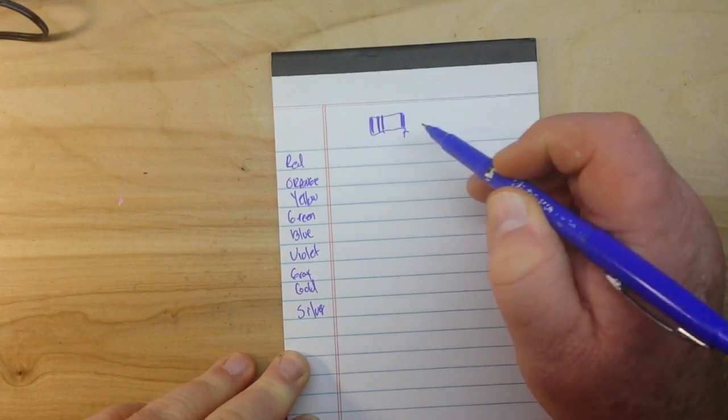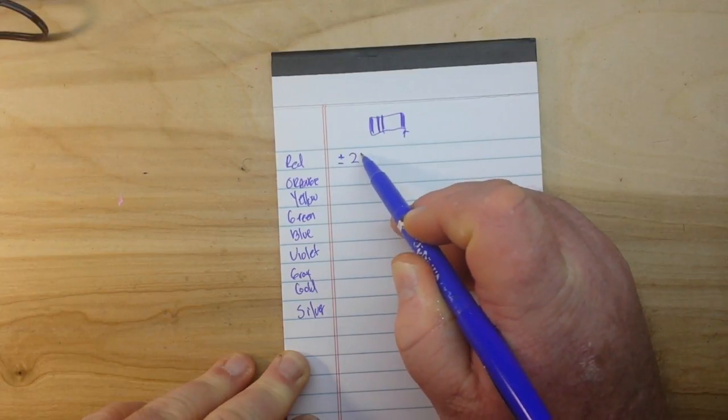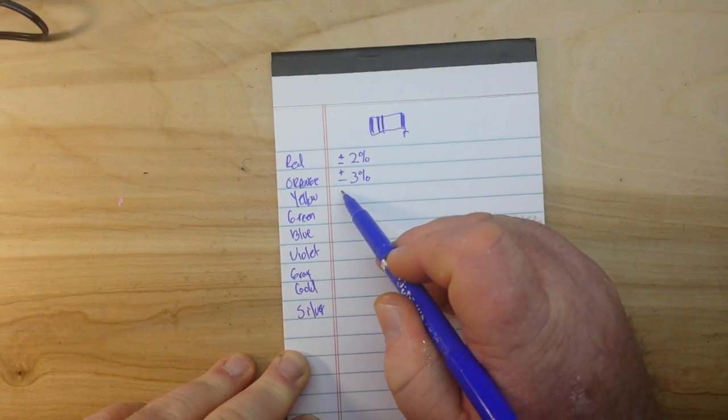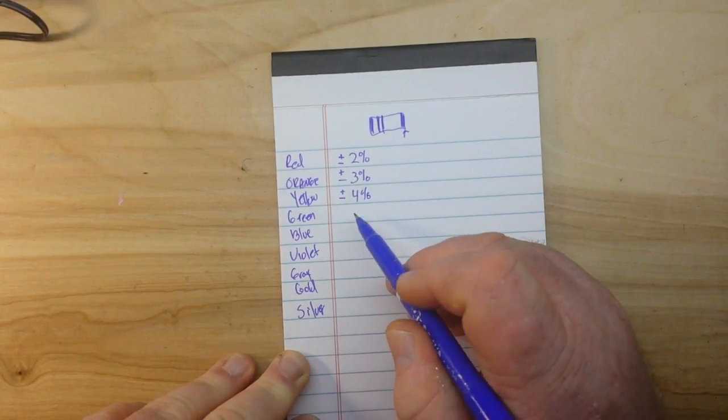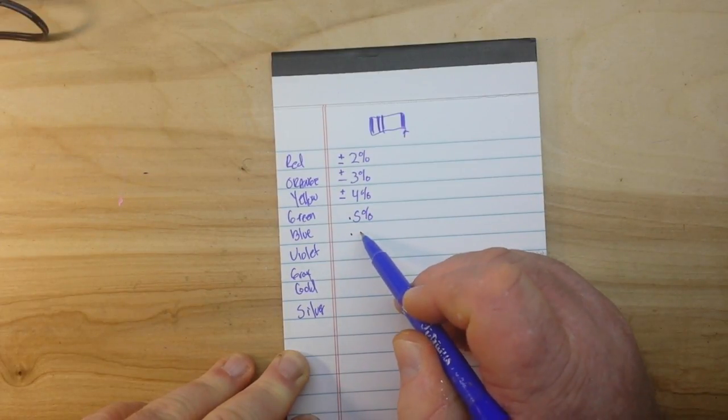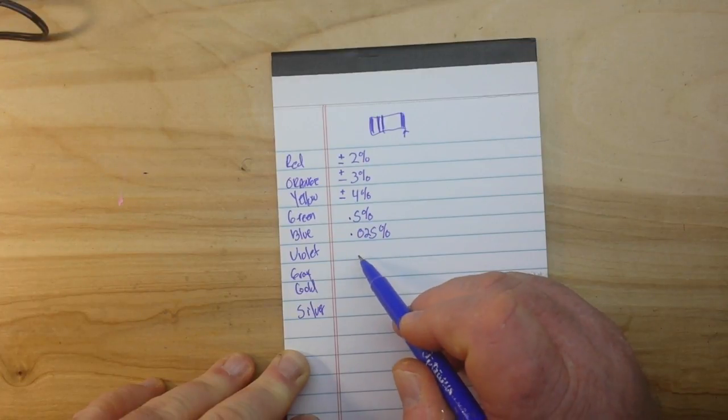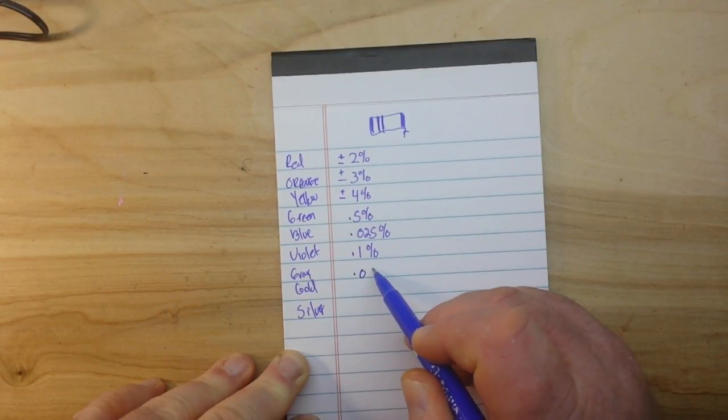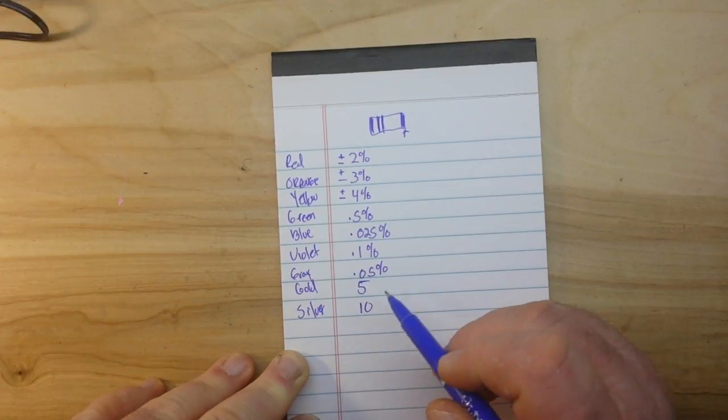And it goes like this: red is plus or minus two percent, orange is plus or minus three percent, yellow is four percent, green is 0.5%, blue is 0.025% (those are some very precision resistors), violet is 0.1%, gray is 0.05%, and the ones you're gonna see most often are gold at five percent and silver at ten percent.